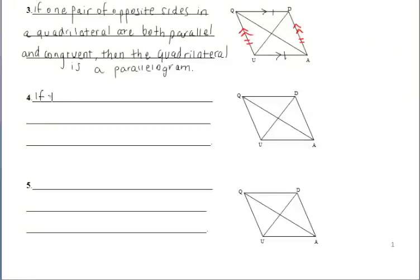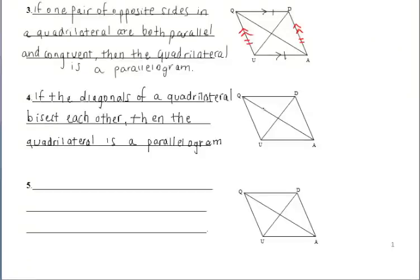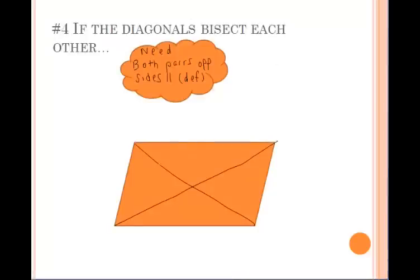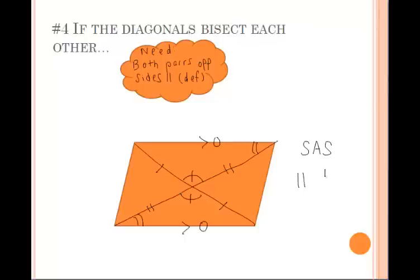The fourth way states that if the diagonals of a quadrilateral bisect each other, then the quadrilateral is a parallelogram — the converse of a property we already know. We know the diagonals bisect each other, but we need both pairs of opposite sides to be parallel. The vertical angles are congruent, making the two triangles congruent by SAS. Using CPCTC on those angles gives us parallel opposite sides; using CPCTC on those segments gives us congruent opposite sides. So we have one pair of opposite sides both parallel and congruent, which ultimately leads to a parallelogram.